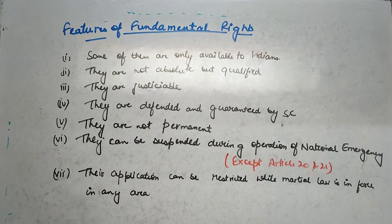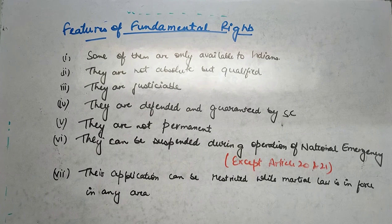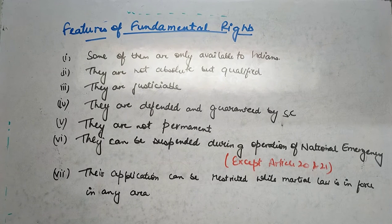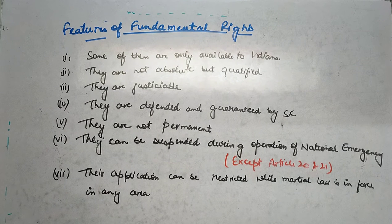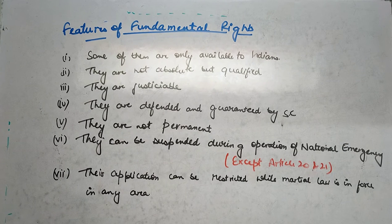Now moving on to the features of fundamental rights. First, some of them are only available to Indians — kuch siraf Indians ko available hote hain, aur kuch foreigners ko bhi hote hain. We will see which rights are for Indians only and which are available to foreigners when we study each fundamental right individually. Second, they are not absolute but qualified. Absolute means the state cannot impose any restriction on them, while qualified means the state can impose restrictions. So the state can impose restrictions on fundamental rights when it deems necessary.